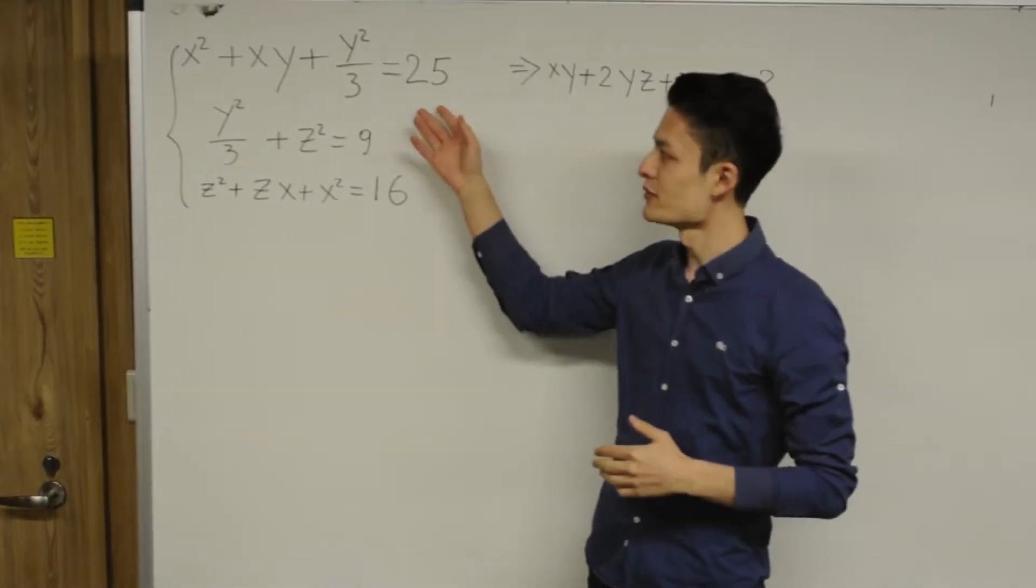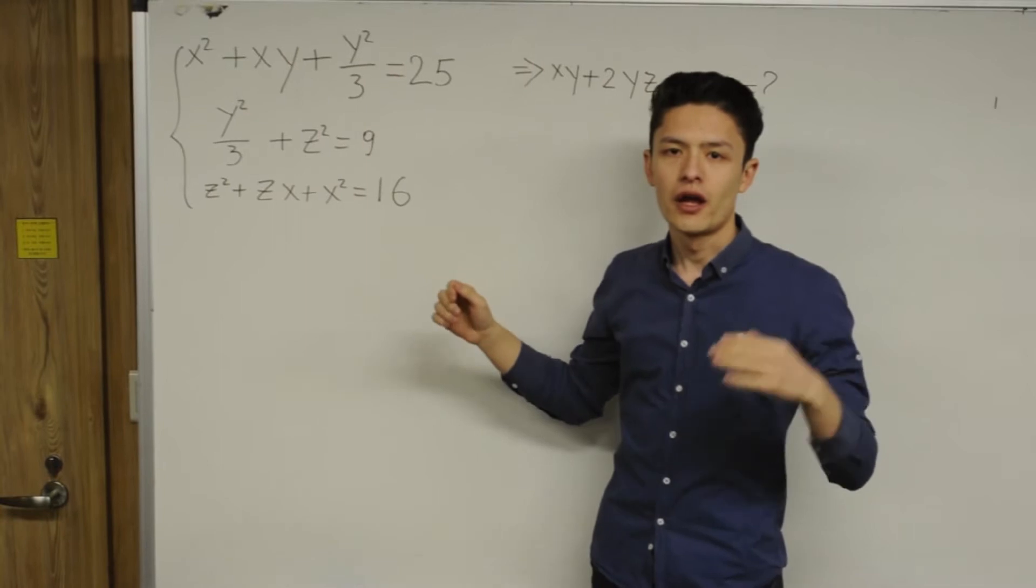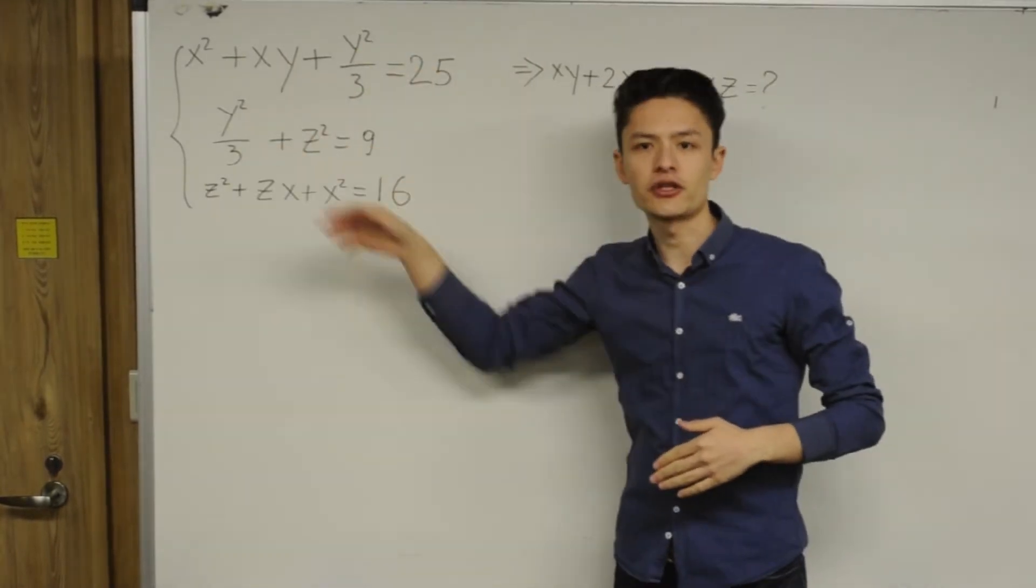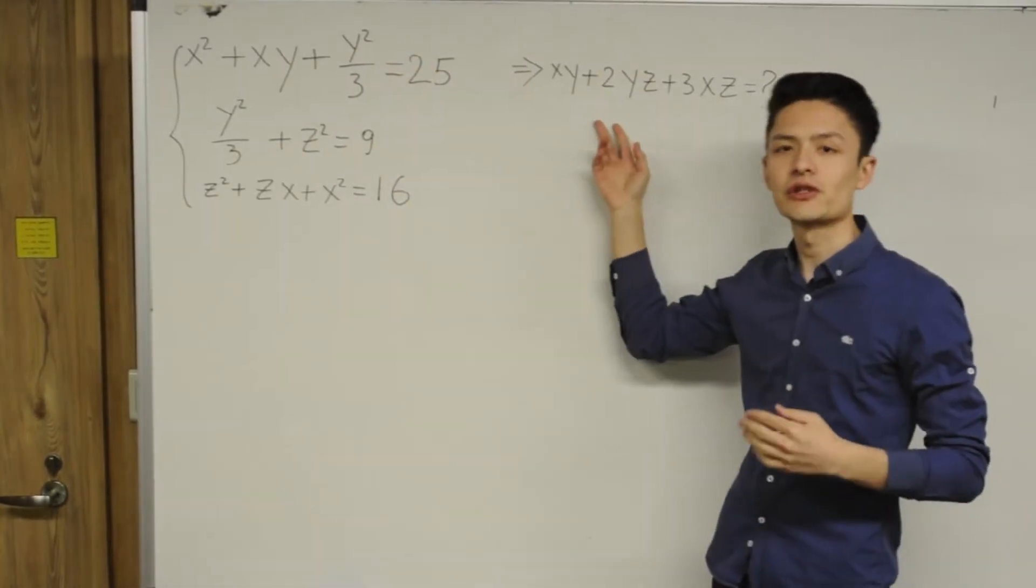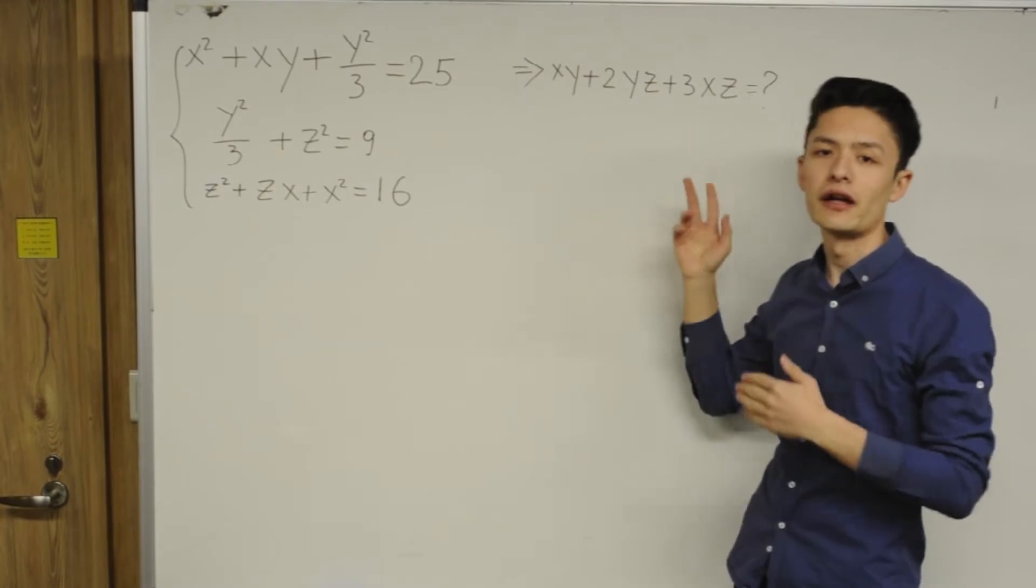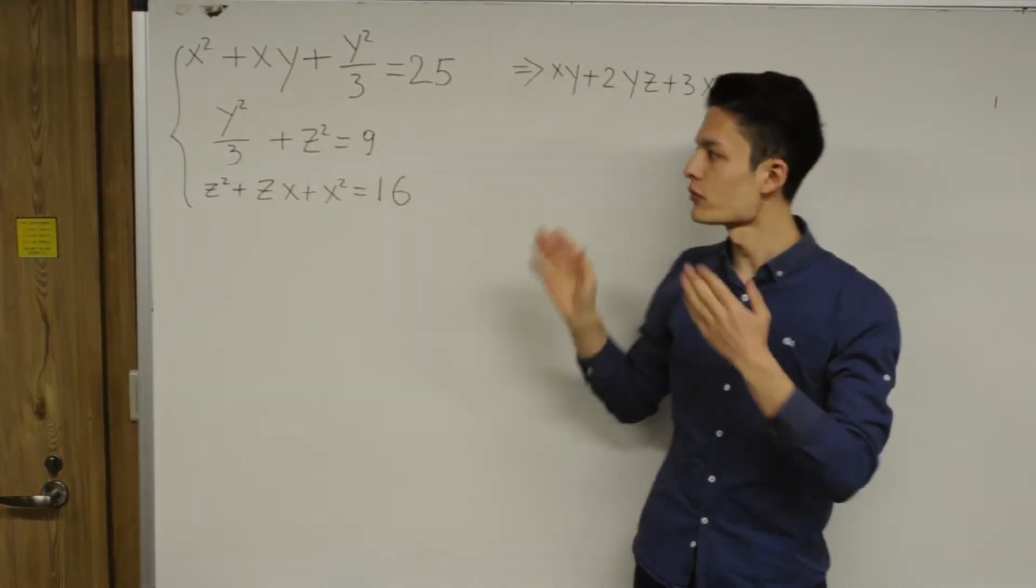So now we have a system of equations we need to solve, and based on this given condition, we gotta find xy plus 2yz plus 3xz.